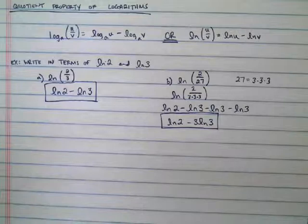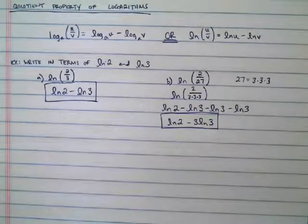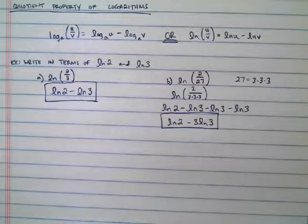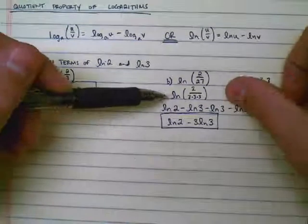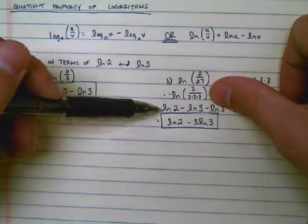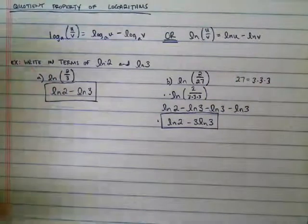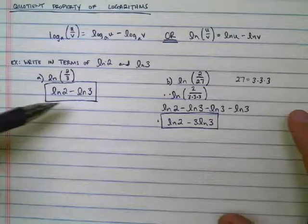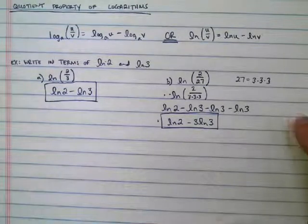Now, once again, if you watch the product property video, you saw that there's probably a pattern here. I do know that there's a way to get from here to here quickly without going through this middle step. So this is a longer way, but it works. If you want to know the shortcut, then go watch the video about the power property, which is coming up next.